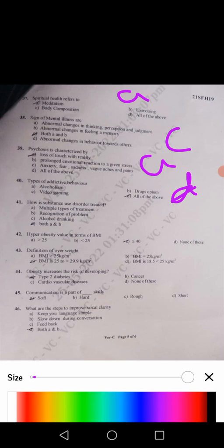Forty-first: how is substance use disorder treated? Multiple types of treatment, recognition of a problem - both A and B, answer is D. Forty-second: hyper obesity value in terms of body mass index BMI - answer is C, that is 40. Forty-third: definition of overweight, BMI 25 to 29.9 kg per meter square - correct answer is C. Forty-fourth: obesity increases the risk of developing type 2 diabetes - answer is A. Forty-fifth: communication is a part of soft skills - answer is A. Forty-sixth: what are the steps to improve vocal clarity? Keep your language simple, slow down during conversation, feedback, both A and B - answer is D.